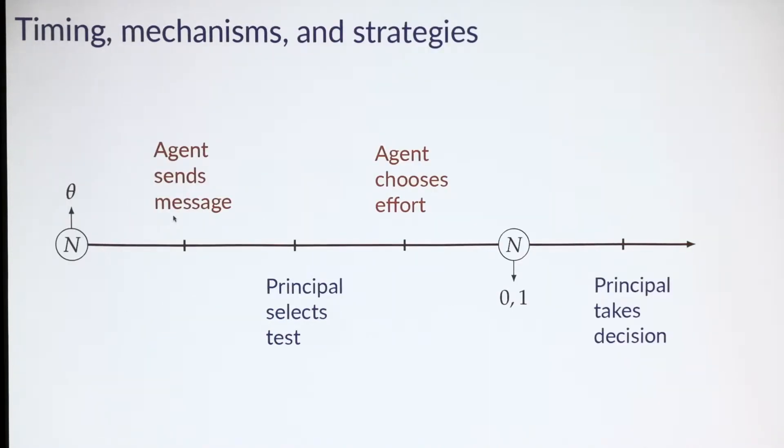Let me describe the timing. This is a big slide with a lot on it, so let's go through it slowly. First, nature draws the agent's type theta. The agent, knowing his type, sends a message to the principal. The principal then selects a test. The agent sees this test and chooses effort. Next, nature draws the test result, either pass or fail—we're denoting this one for pass, zero for fail. The distribution depends on the agent's true type and on whether the agent is exerting effort. Finally, the principal takes a decision.